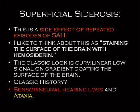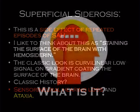Superficial siderosis could show up as a 'what does this person have?' question with just a picture and no history. Or it can be used as a clue in the history to make you work backwards to a next-step question to look for the aneurysm. Key association: superficial siderosis is a long sequela of subarachnoid hemorrhage presenting with sensorineural hearing loss.